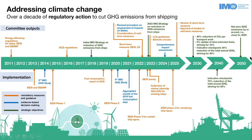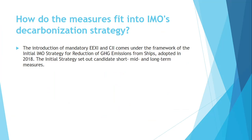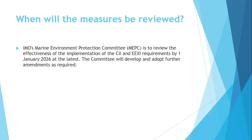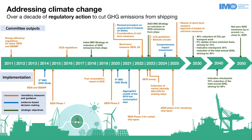For that reason they are bringing EEDI, DCS, EEXI, CII, and further measures in the near future. If anybody asks why all this is happening, the answer is: it is part of the IMO decarbonization strategy, and EEXI and CII are short-term measures. The next review will be done in 2026 to assess how effective the implementation of CII and EEXI requirements are, and based on that they will take more stringent action.